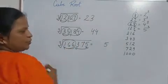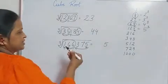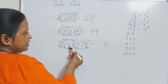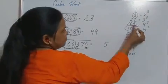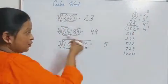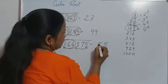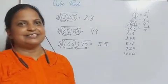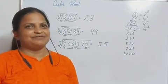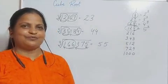Then the other group, 166. The nearest cube to 166 is 125, which is lower than it: 5. So the cube root of 166,375 is 55. Thanks for watching.